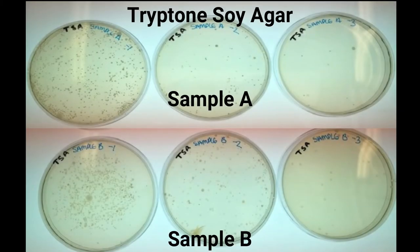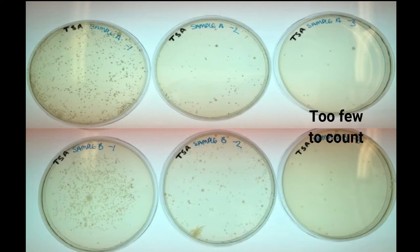The next day you should inspect your plates and count the number of colonies on each plate. Remember to only count plates that contain between 30 and 300 colonies. Designate plates with fewer than 30 colonies as too few to count and plates with more than 300 colonies as too numerous to count. For TSA, you should count the total number of colonies.